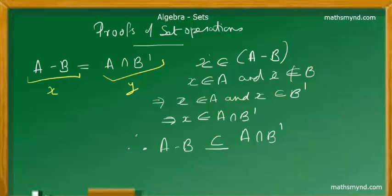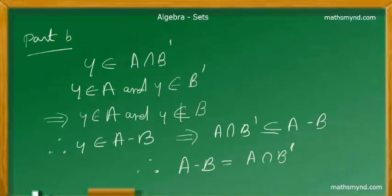Therefore, A minus B is a subset of A intersection B complement. Now let's look at the other side and we are choosing another arbitrary element.